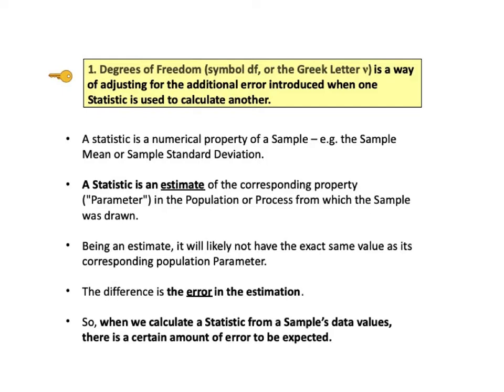A statistic is a numerical property of a sample, for example, the sample mean or the sample standard deviation. A statistic is an estimate of the corresponding property in the population or process from which the sample was drawn. A parameter is the word we use as the value of the property for the whole population or process.